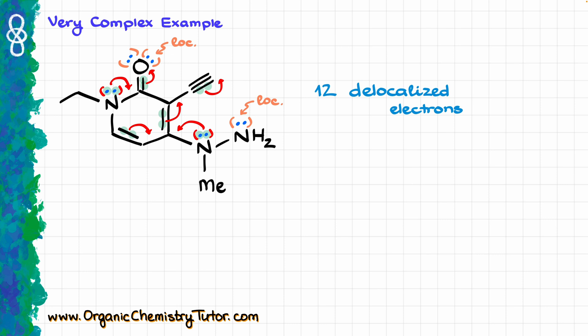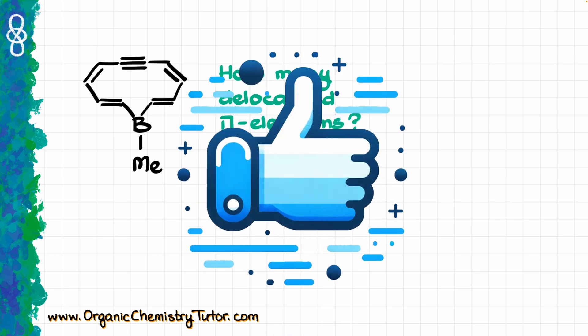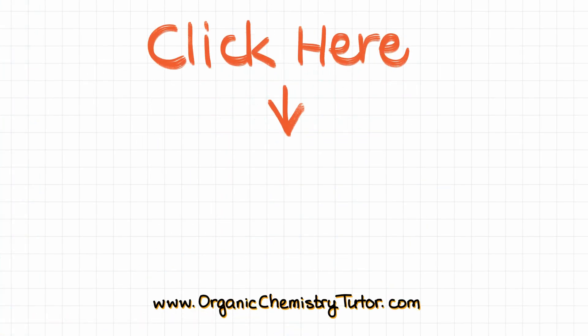Some instructors can be tricky and ask only about the delocalized electrons on heteroatoms specifically, in which case we would have four delocalized electrons on the nitrogens. So when counting delocalized electrons, it can mean either all electrons meaningfully participating in resonance in the entire molecule, or specifically the delocalizable electrons sitting on heteroatoms. Always pay close attention to how the question is phrased so you don't get tricked. If you like a challenge, let me know how many delocalized electrons are in the molecule shown and write that in the comments below. Thank you for watching — if you learned something new, like and subscribe for more.